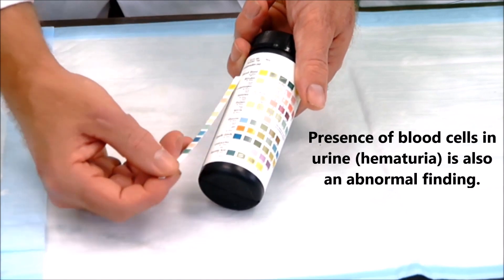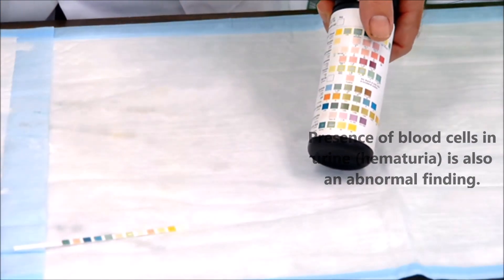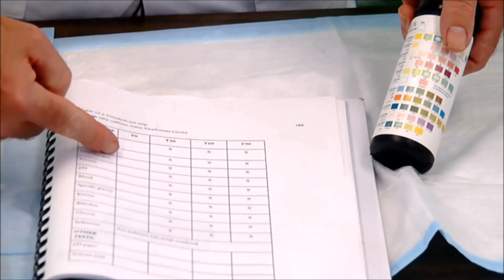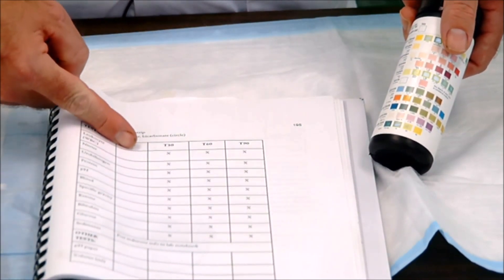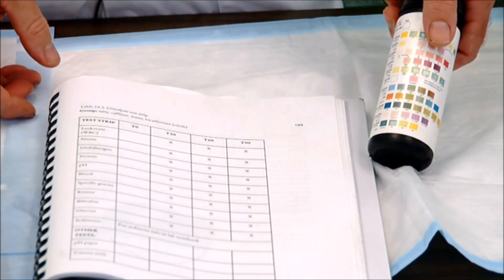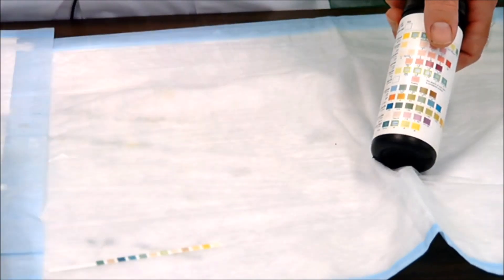So once you've done this test strip, you want to record that information in your lab manual under the time zero. So this was our time zero, and all that information goes right here. Okay, after that, you probably have another 10 or 15 minutes before it's time to pee. Once you do that, you want to do the whole process over again.